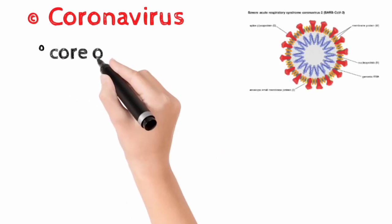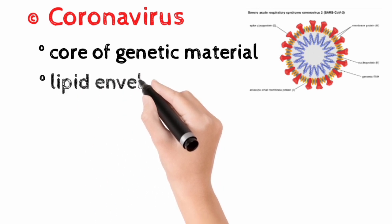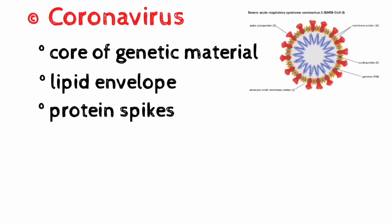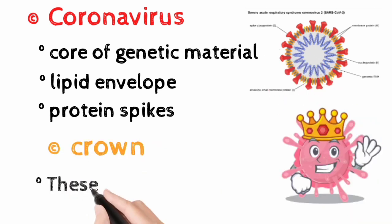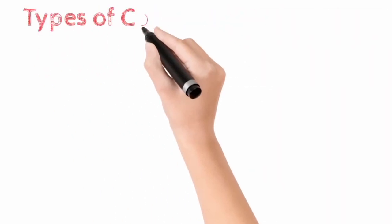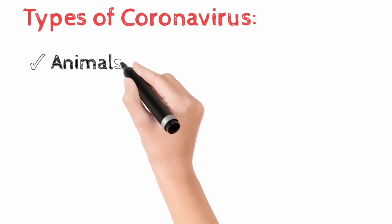Coronaviruses are a large group of viruses. They consist of a core of genetic material surrounded by a lipid envelope with protein spikes. This gives them the appearance of a crown, and crown in Latin is called corona, and that's how these viruses get their name. There are different types of coronaviruses that cause illness in animals and humans.